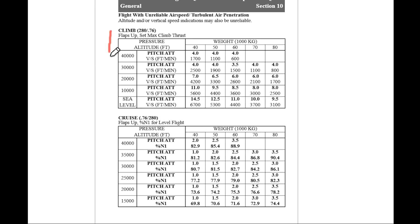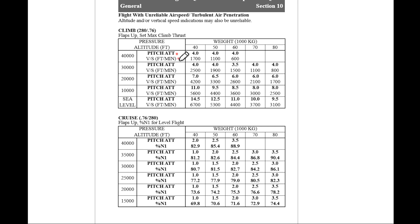We have a table for climb. You can see a speed of 280, max 7.6, flaps up, set max climb thrust, and it goes up to 40,000 feet. You see the pitch, altitude, and the vertical speed in feet per minute. Here we have the weight of the airplane, so you can cross-check with your weight what you should get for pitch, altitude, or vertical speed at this altitude.